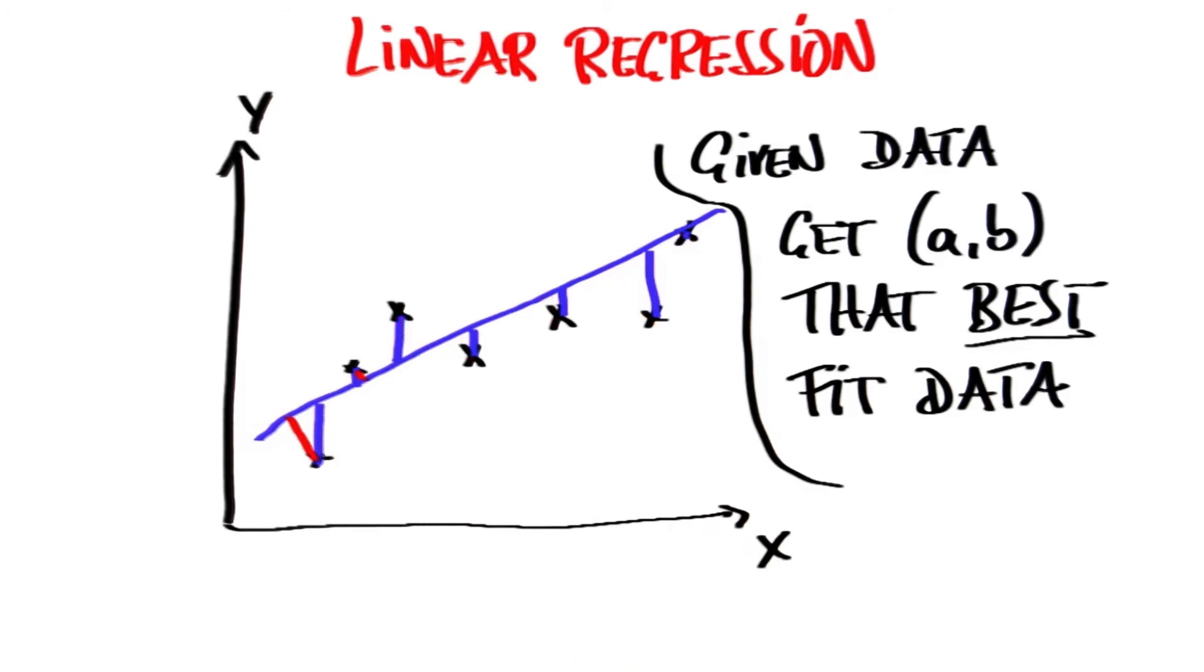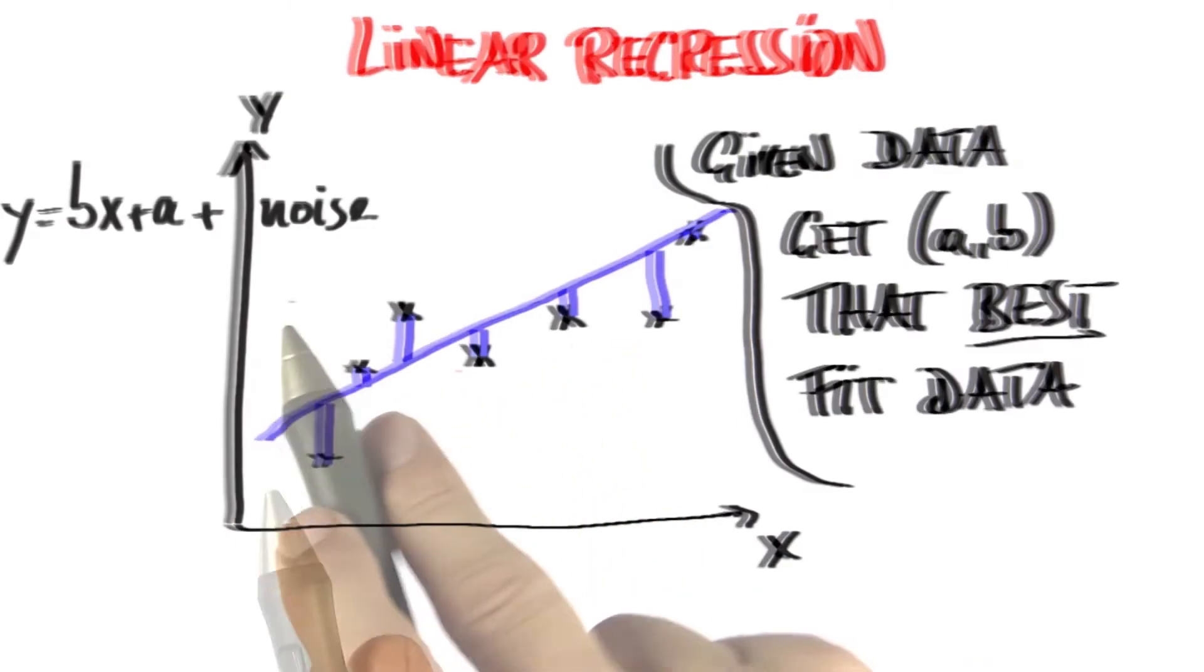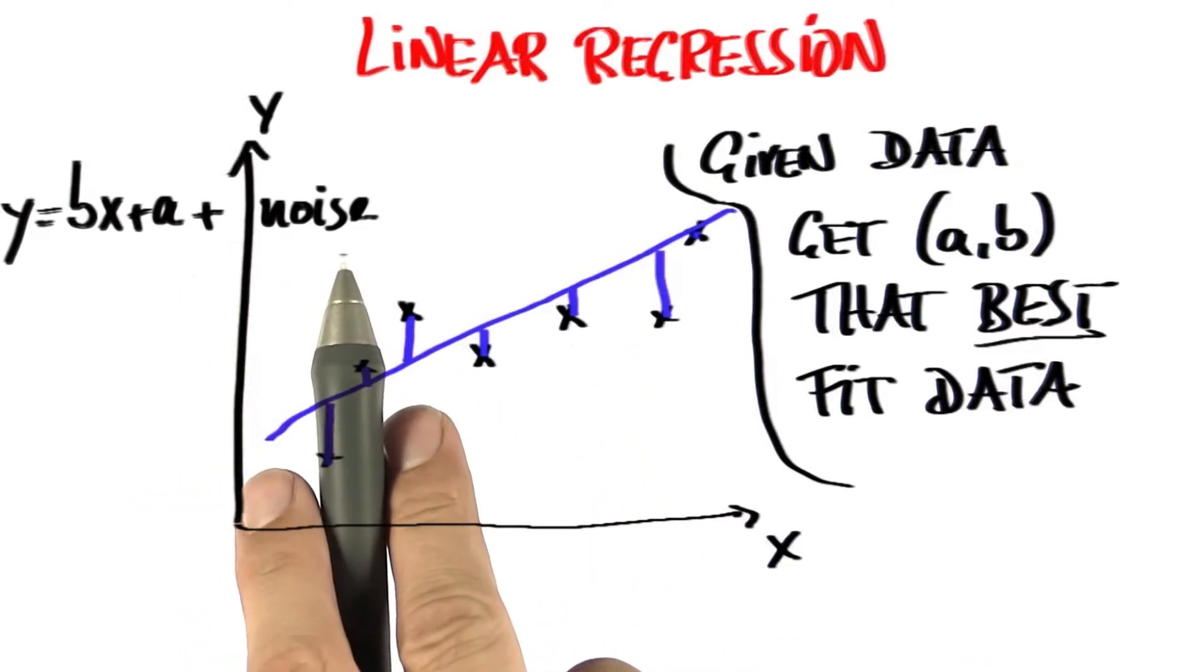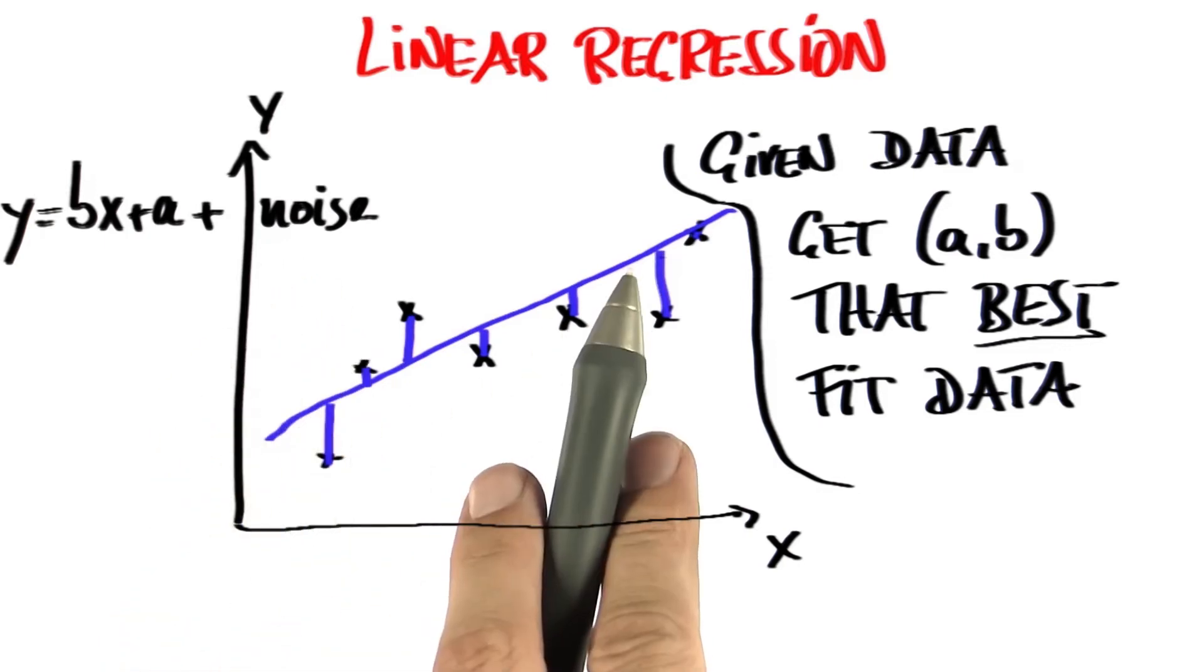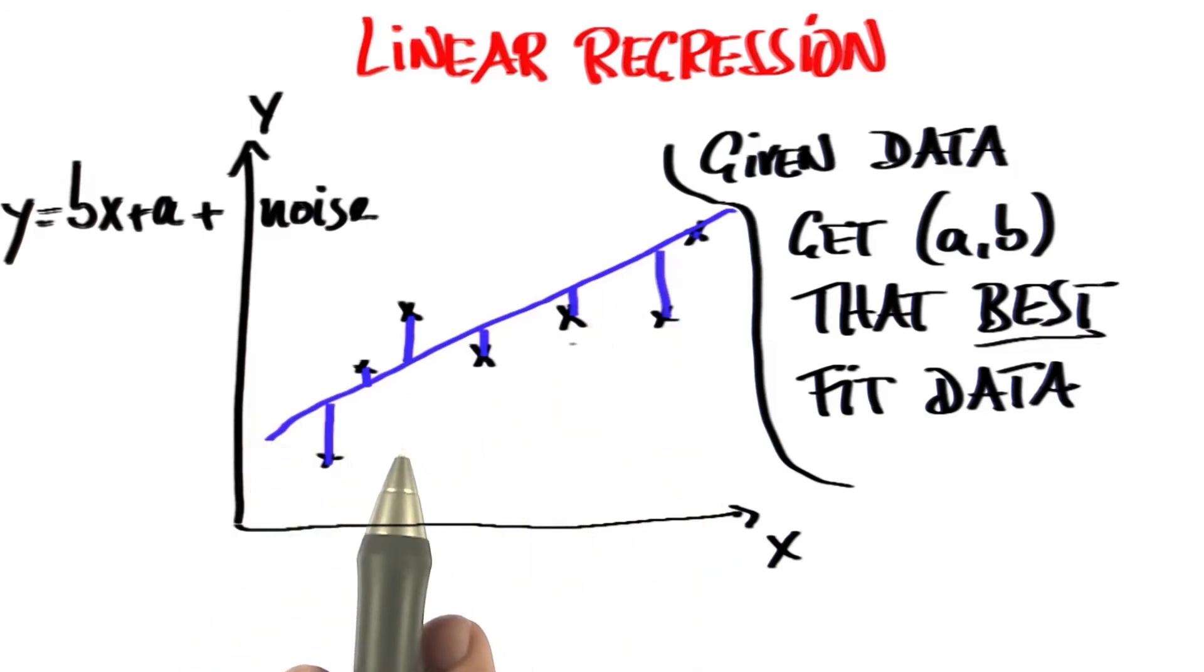In summary, we assume that our data is the result of applying some unknown linear function, bx plus a, plus noise. And if this noise is assumed to be Gaussian, then minimizing the quadratic deviation between the data points and the line happens to be the correct mathematical answer.